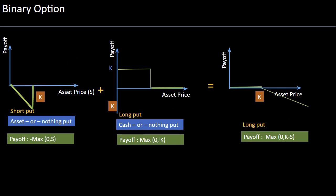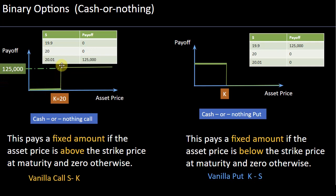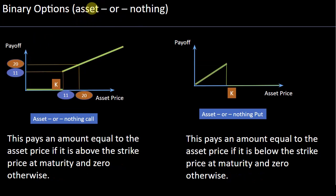In a similar way, you can take a short position in an asset-or-nothing put and a long position in a cash-or-nothing put to end up with a long put option. This demonstrates how two binary options — exotic options — can be combined to create a plain vanilla call or put. To summarize: cash-or-nothing pays a fixed amount or zero, asset-or-nothing pays the asset price or zero, and combinations of binary options can replicate standard option payoffs.